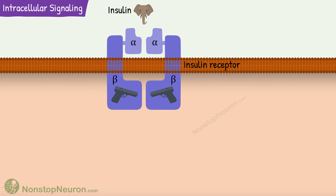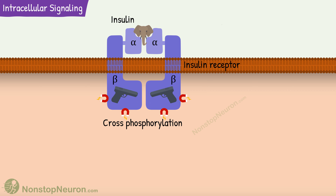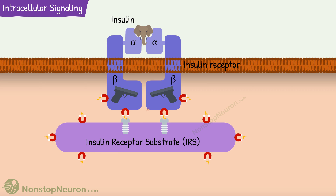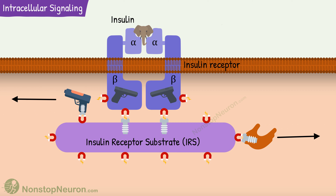Now let's talk about the signaling pathway. First, the insulin binds to the alpha chains outside the cell. This binding increases the tyrosine kinase activity of the beta chains inside the cell. These activated beta chains now phosphorylate tyrosine residues on each other — this is called cross phosphorylation. These phosphorylated tyrosine residues attract downstream molecules, important among them are insulin receptor substrate proteins. Upon binding, they are also phosphorylated at specific tyrosine residues by the insulin receptor.